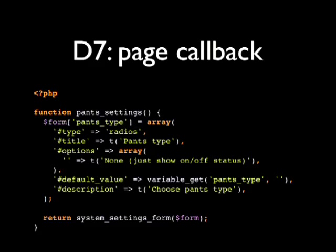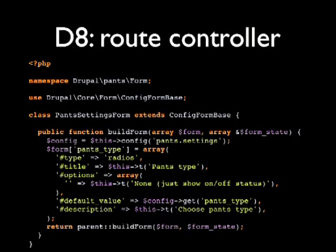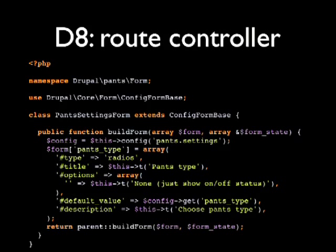Here's the D7 version of the page callback — a settings form that determined pants type with no pants options, using regular form API and system_settings_form. The Drupal 8 version is a route controller with a buildForm method. We have form API all the way down, and the parent class ConfigFormBase provides most of the magic that system_settings_form used to do. Instead of a single function in a file, you have a method on a class.